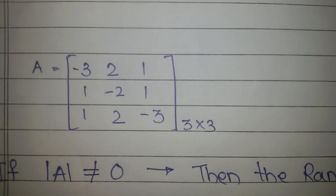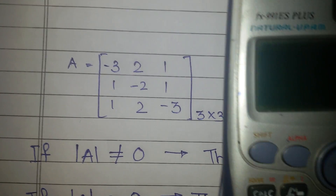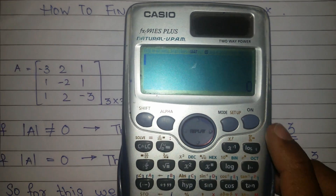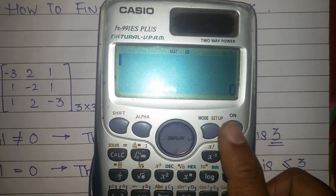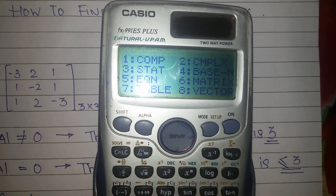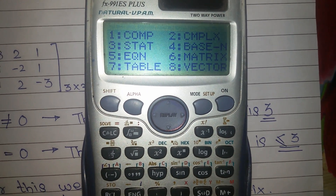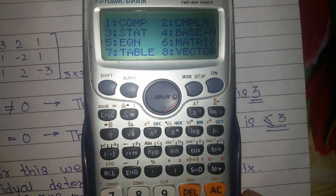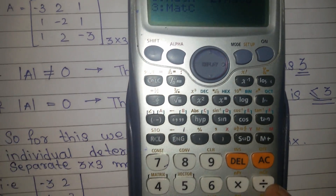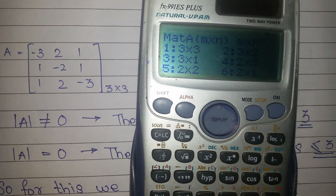First we have to find out its determinant, so we will find it out using the Casio calculator. I will be putting all the values in it. First you have to press ON, then press MODE. In mode, press 6 — as you see, matrix is on 6, so press 6 for selecting matrix. Then select MAT A, which is on number 1, so press 1.